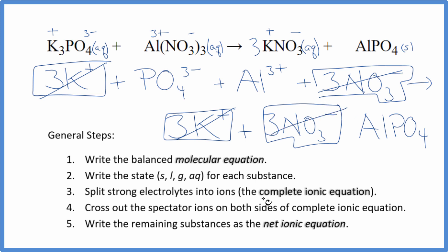But what's left, that's the net ionic equation for K3PO4 plus Al(NO3)3. I'll clean it up, write the states. We'll have our net ionic equation.